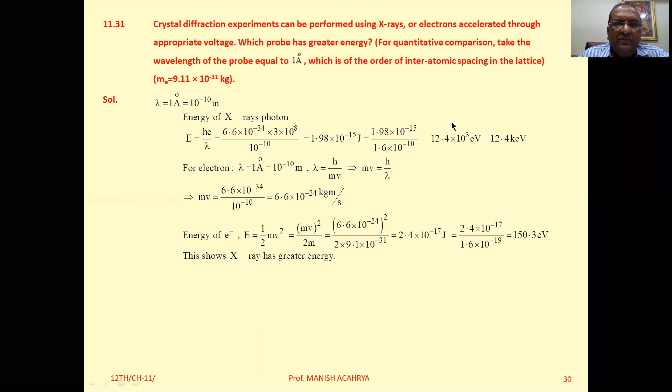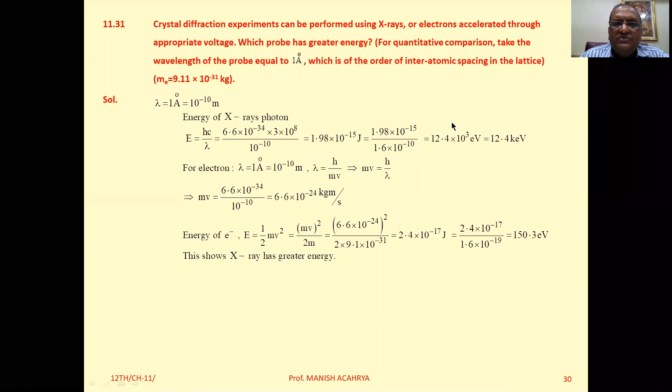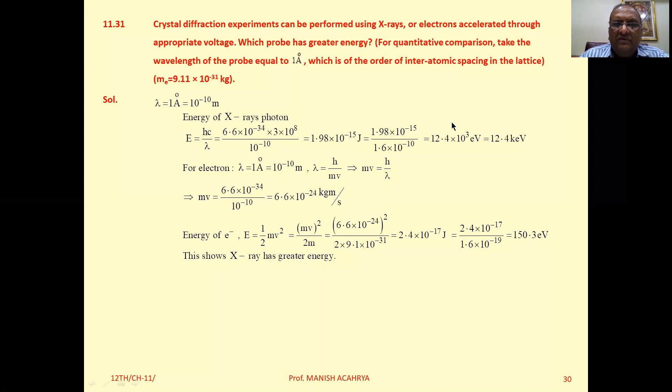Now Example 11.31: Crystal diffraction experiments can be performed using X-rays or electrons accelerated to appropriate voltage. Which probe has greater energy? For quantitative comparison, take the wavelength of the probe equal to 1 angstrom, which is of the order of inter-atomic spacing in the lattice.